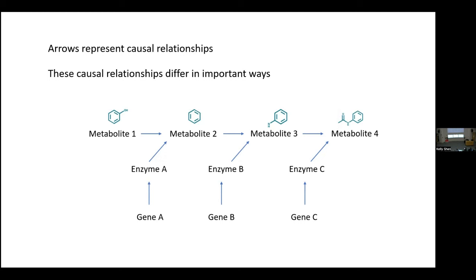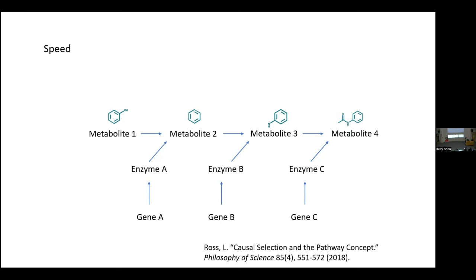The arrows in this diagram represent causal relationships. However, these causal relationships are not all created equal — one thing the diagram is not showing is that these causal relationships differ in really important ways. A first way they differ is with respect to the speed or timescale on which they unfold. The gene-to-enzyme causal relationship takes place on the timescale of minutes; the enzyme-to-metabolite causal relationship operates on a much faster timescale — nanoseconds. An average enzyme can produce on the order of 3 million metabolites per second.